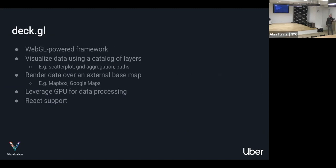deck.gl is our primary product — it's a WebGL-powered JavaScript React library. The idea is that you take your geospatial data, load it, and visualize it on top of a base map as a series of layers. We have a scatter plot layer that puts points for each lat/long data point, grid aggregation that divides the map into grids and counts how many points are in each one, and paths — so I can draw a path between trip start and end points.